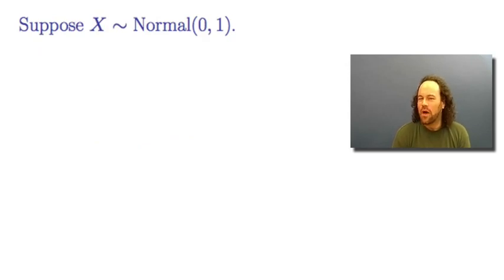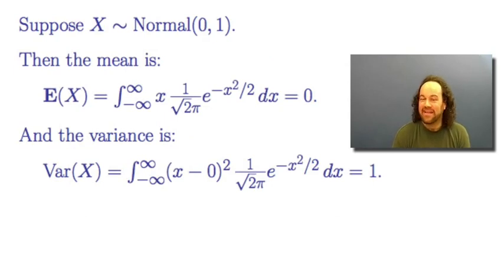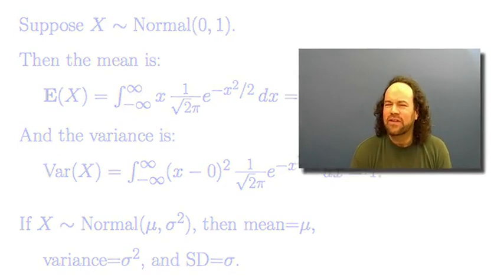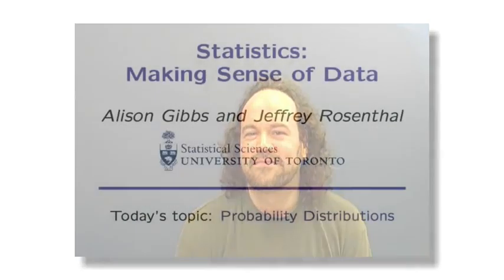For the normal distribution, it's built into the notation: normal(0, 1) has mean 0 and variance and standard deviation both equal to 1. Normal(μ, σ²) has mean μ, variance σ², and standard deviation σ. We don't need to worry too much about computing those integrals in this course — we just need to understand there are all sorts of probability distributions, discrete and continuous, each with means and variances. In particular, the normal distribution will turn out to be the most important, as we'll see in the next lecture.